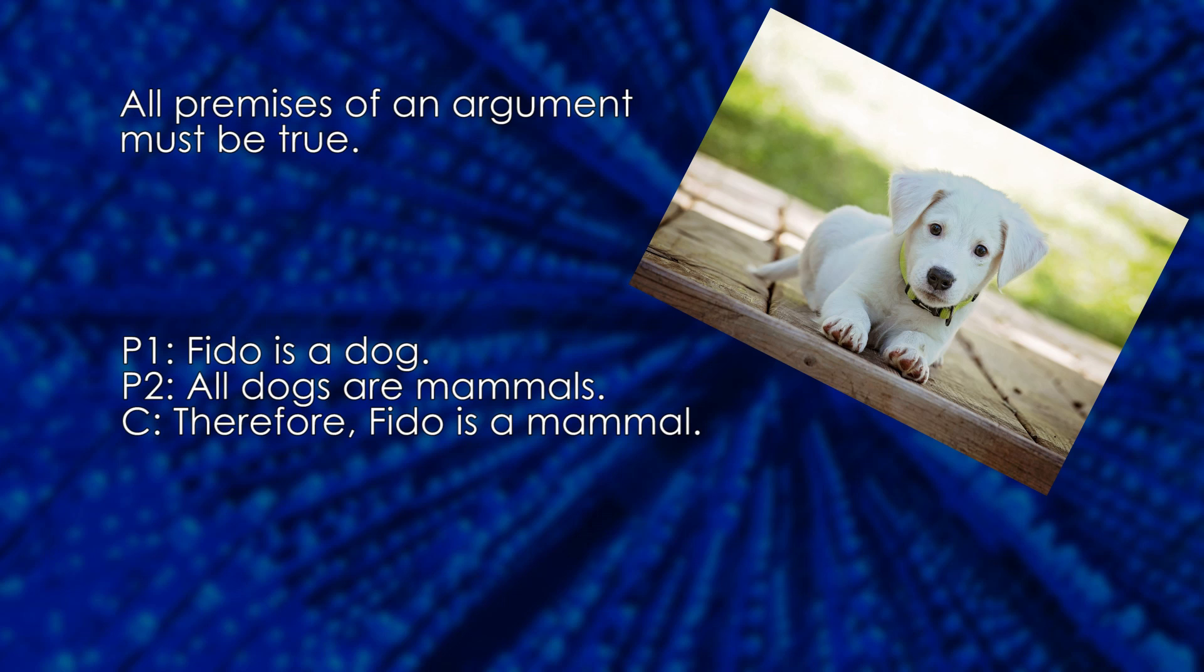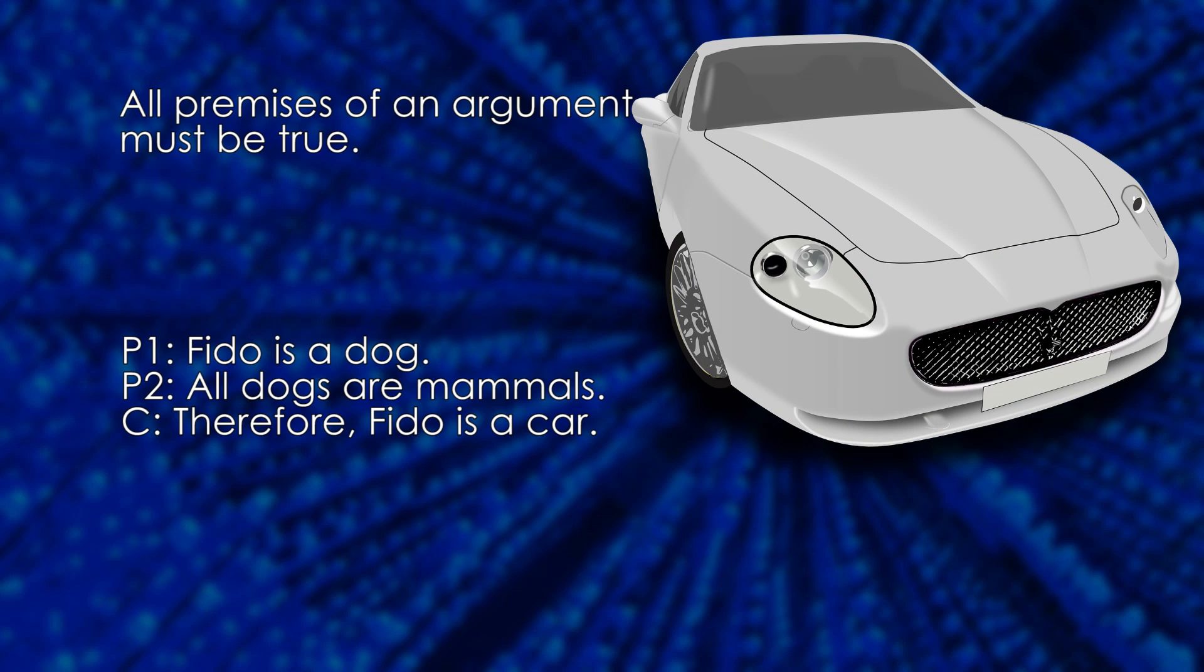But is this always enough? No. Let's try this. Premise 1: Fido is a dog. Premise 2: All dogs are mammals. Therefore, Fido is a car.